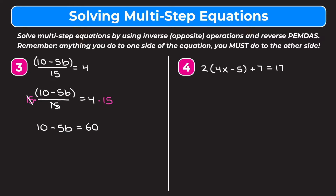We have 10 minus 5b equals 60. Reverse PEMDAS tells us to get rid of the 10 being added first, so we subtract 10 from both sides. The 10s cancel on the left leaving negative 5b. On the right 60 minus 10 is 50, giving us negative 5b equals 50. It's very important to keep that negative sign in front of the 5b — sometimes students drop it and just write 5b. Remember to keep whatever sign is in front of the term.